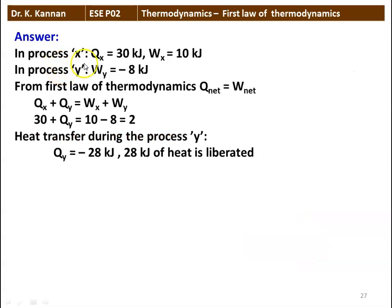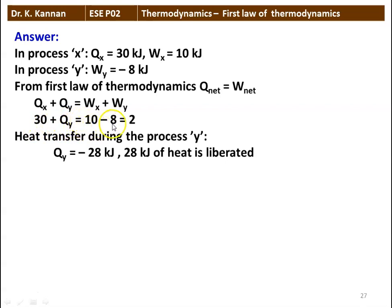For process X: QX = 30 kilojoules, WX = 10 kilojoules. For process Y: WY = minus 8 kilojoules. From the first law of thermodynamics, net heat transfer equals net work transfer, so QX + QY = WX + WY. Substituting: 30 + QY = 10 − 8 = 2. So QY = minus 28 kilojoules, meaning 28 kilojoules of heat is liberated during the process.